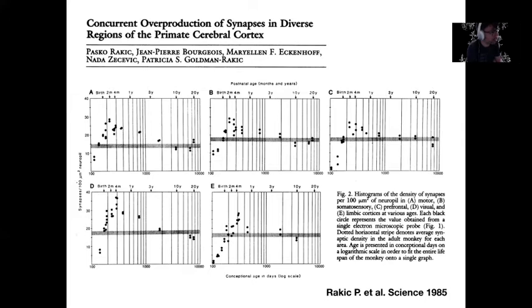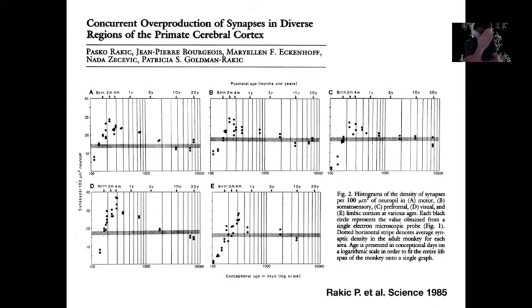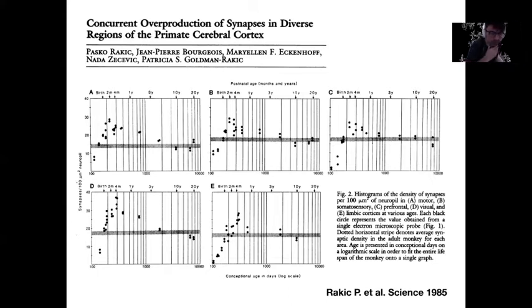This is true whether you're looking in A, the motor cortex; B, the somatosensory cortex; C, the prefrontal cortex; D, the visual cortex; or E, the limbic cortex. That was done with electron microscopy, probably one of the highest resolutions we can have with a biological sample. You can see how you progressively decrease — the highest is at birth, and then the amount of synapses progressively decreases: two months, four months, one year, three years, 10 years, 20 years.